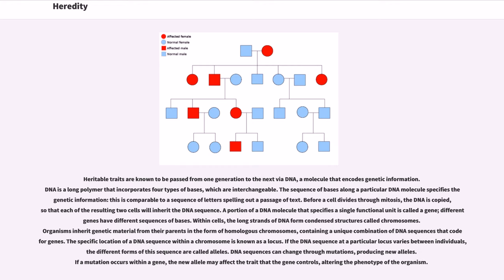Heritable traits are known to be passed from one generation to the next via DNA, a molecule that encodes genetic information. DNA is a long polymer that incorporates four types of bases, which are interchangeable. The sequence of bases along a particular DNA molecule specifies the genetic information.